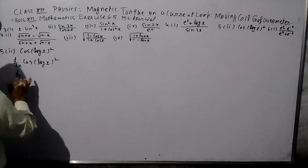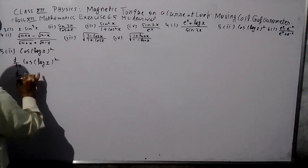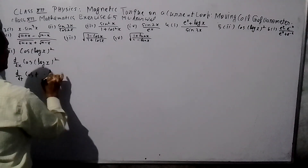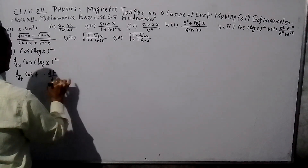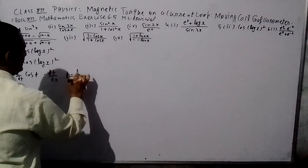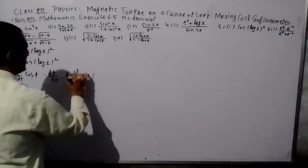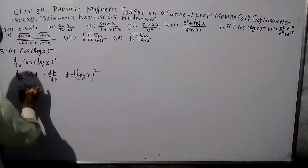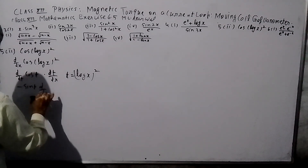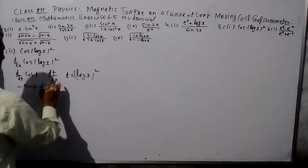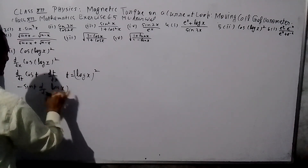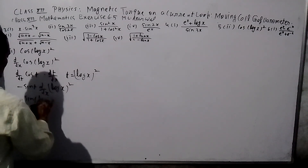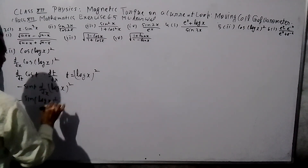So, this is d/dT of cos T, where I am setting T = log x². Then dT/dx. So d/dT of cos T gives minus sin T, and d/dx of T where T value is log x² — so minus sin T, substituting T back as log x².